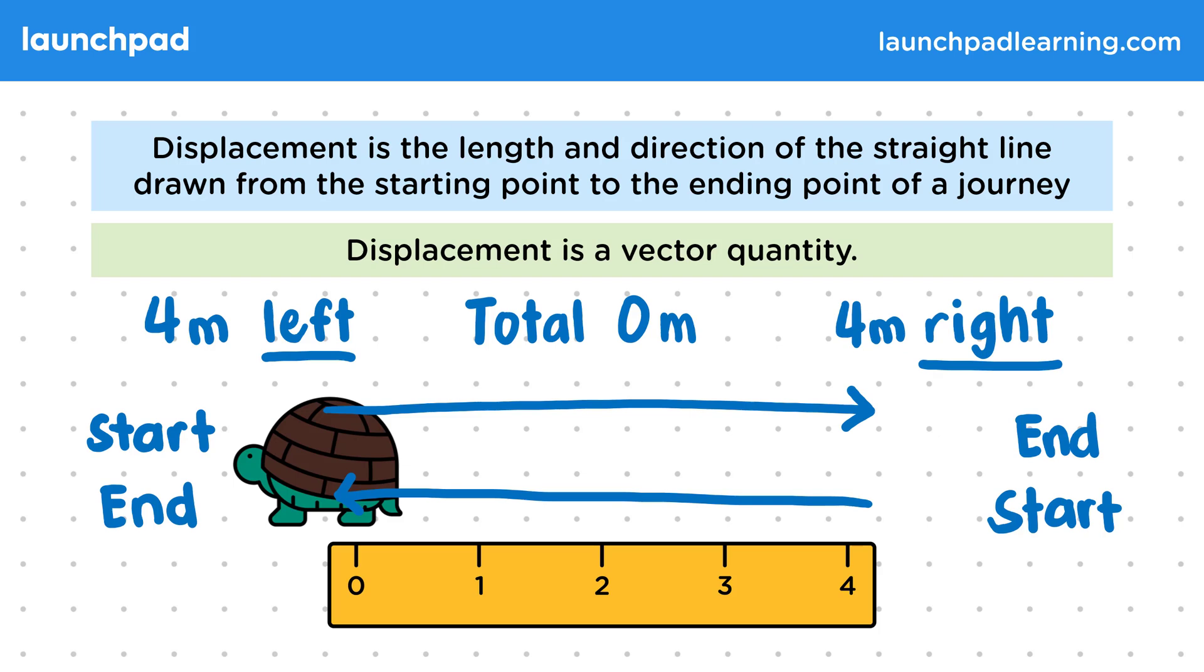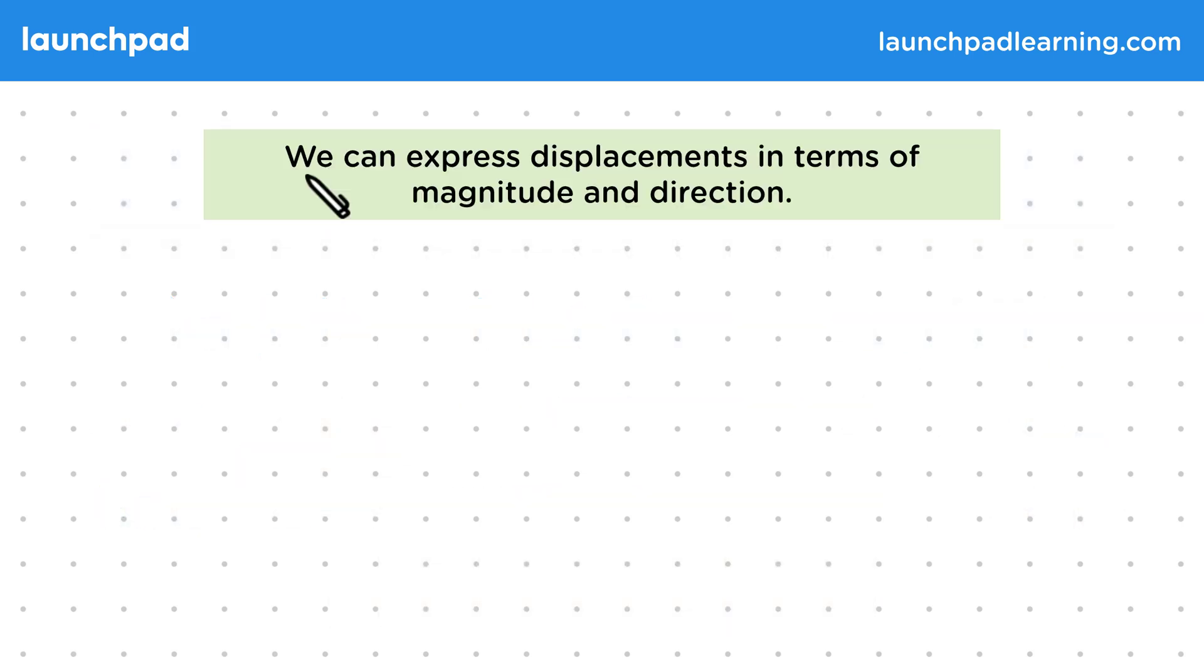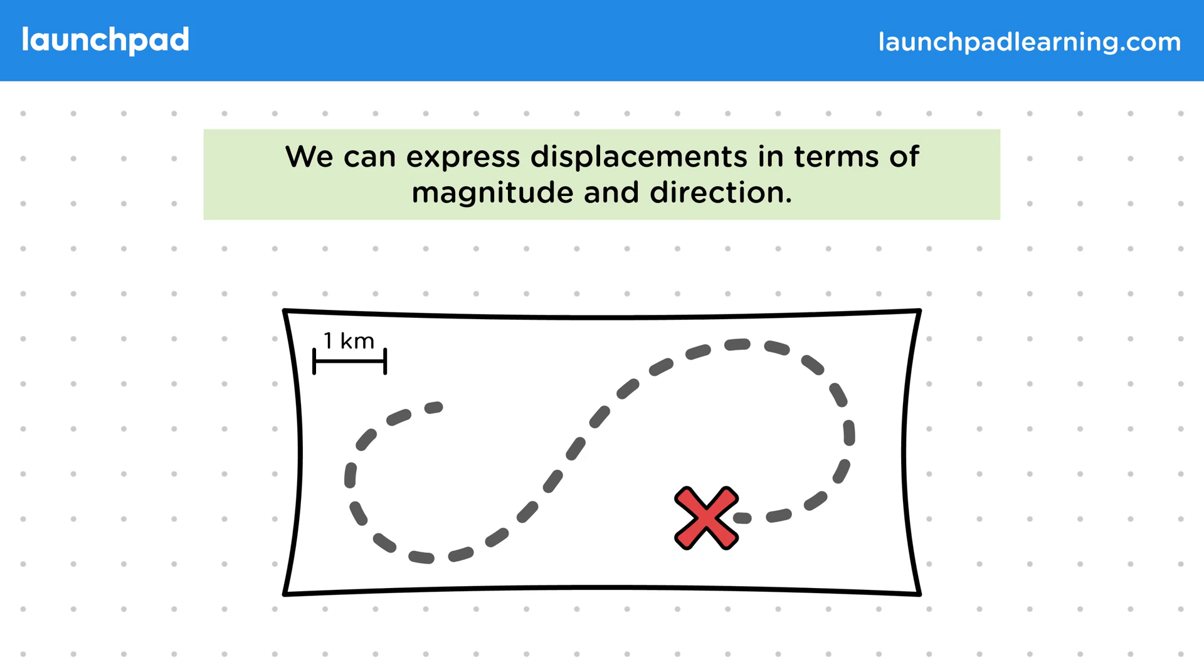So how exactly can we describe a displacement in more detail? Well we can express displacements in terms of magnitude and direction. In this example the displacement is shown by the straight arrow from the start to the end point. And we can find the magnitude of this displacement by simply measuring the distance between the start and end points.